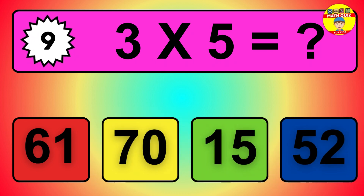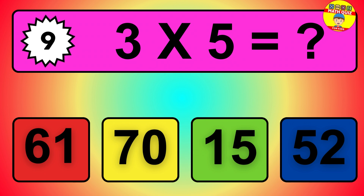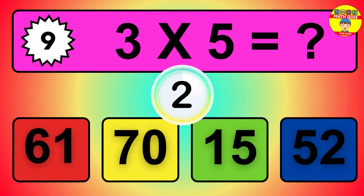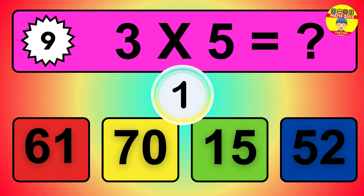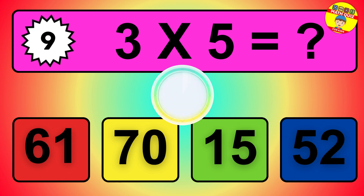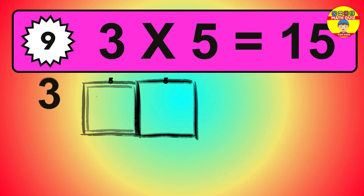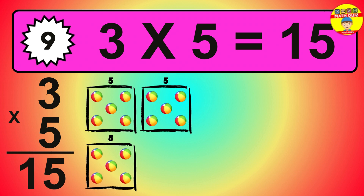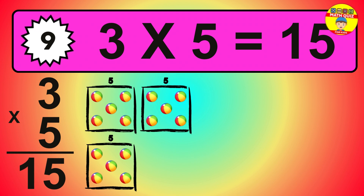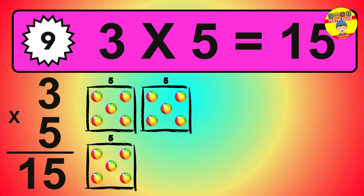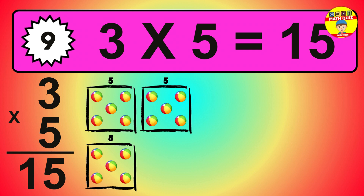Question 9. 3 times 5 equals what? The answer is 3 times 5 is 15. To calculate, we have 3 groups with 5 balls each one. So how many balls do we have? 15 balls.